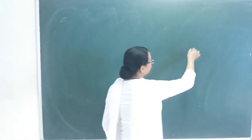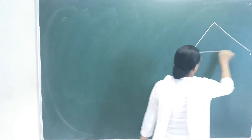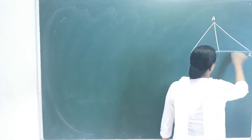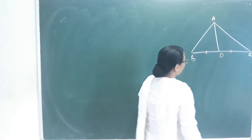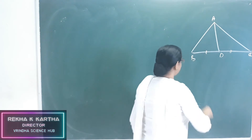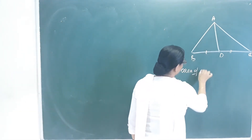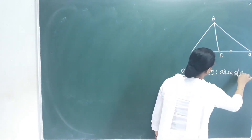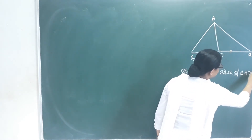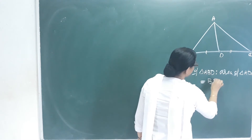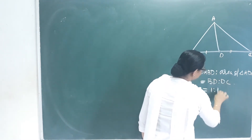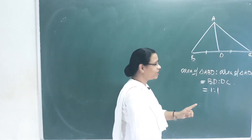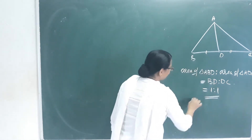We have to draw a triangle. Label the vertices A, B, C. D is the midpoint of BC, so BD equals DC. Area of triangle ABD to area of triangle ADC equals BD to DC, which is equal to 1 to 1. That means they have equal area, so D is the midpoint dividing the triangle into two equal areas.